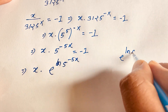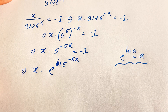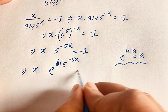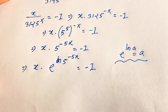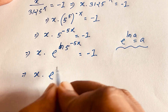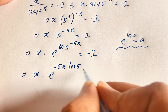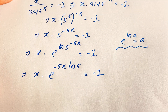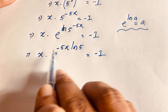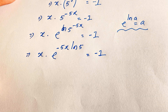So our expression becomes x times e to the power negative 5x ln 5 equals negative 1. Here x and the exponent both contain x but also minus 5 ln 5. I multiply both sides by minus 5 ln 5 to prepare for the Lambert W function.